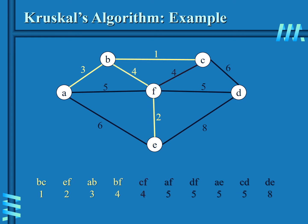CF would create a cycle, so we do not add it. Same with AF. DF is okay, so we add it, and our tree is now connected, we are done.